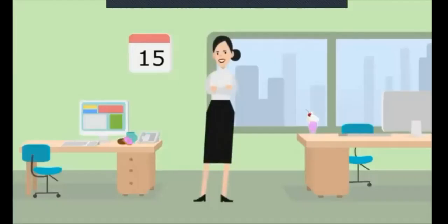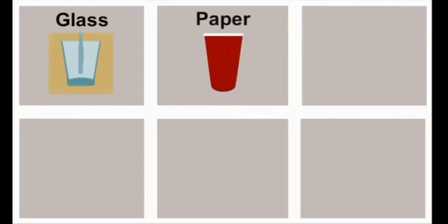Hello, children. Today we will talk about materials and how things are made from each material. There are many kinds of materials. For example, glass — a glass is made out of glass, but there are many other things which can be made out of glass. It's a cup — this is a paper cup. A cup can be made out of paper, and paper books are also made out of paper.